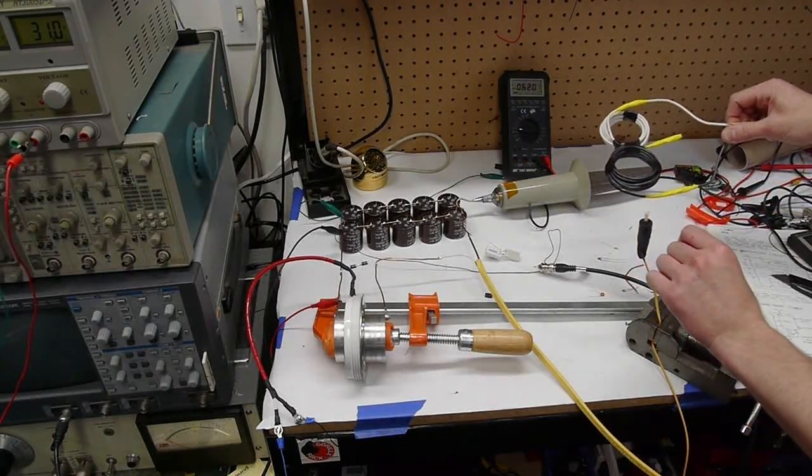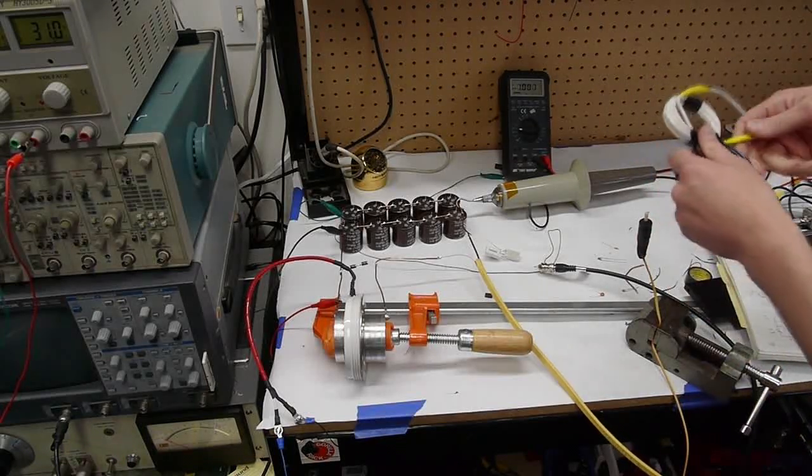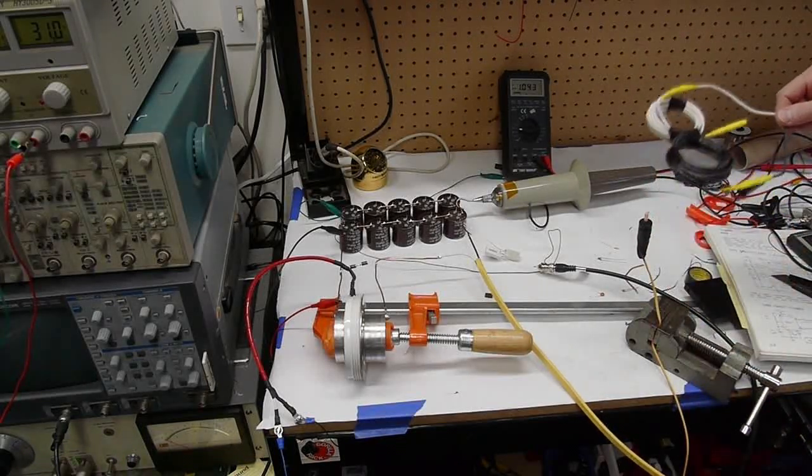And if I hit the trigger, we get a nice large crack as the coil shakes, and then the voltage comes back up to about 1,000 volts.